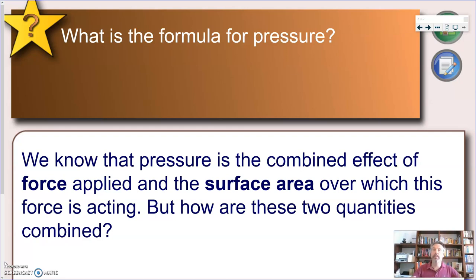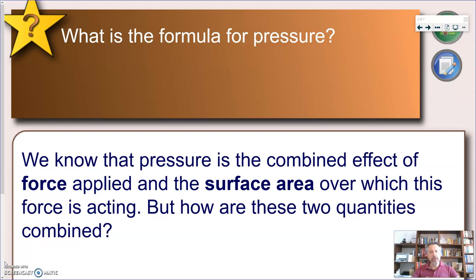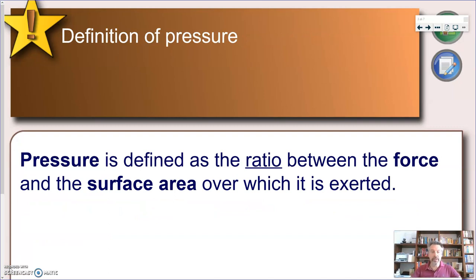We know that pressure is the combined effect of the force applied and the surface area over which this force is acting. From the previous lesson, we saw that the bigger the force, the bigger the pressure — so force and pressure are probably directly proportional: if I double the force, I double the pressure. On the other hand, the relationship with area is different: if we make the area bigger, pressure decreases, and if we make the area smaller, pressure increases. So it's an inversely proportional relationship.